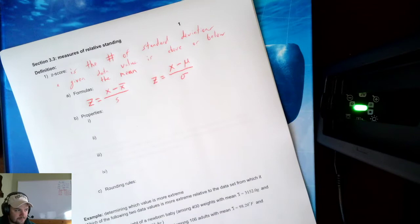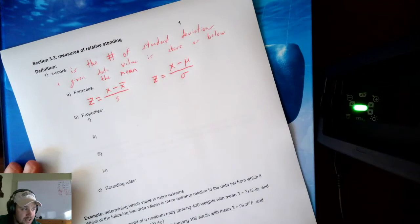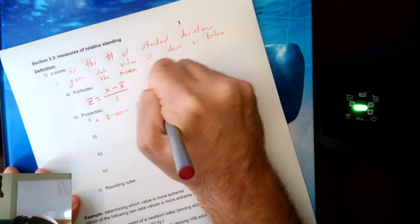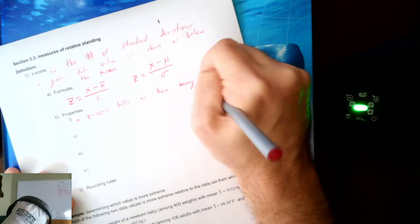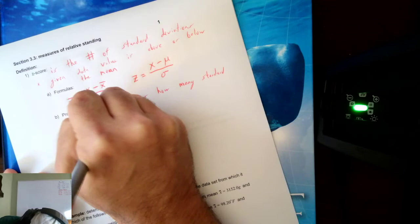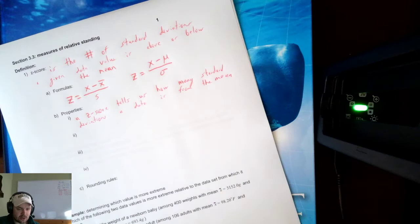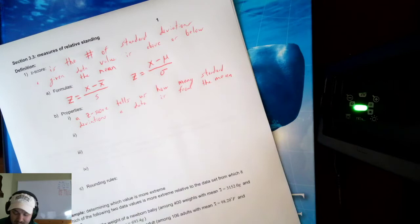Now, what about properties? We have four properties. The first property is a reminder of the definition: a z-score tells us how many standard deviations a data value is from the mean. That is the most important property of the z-score.